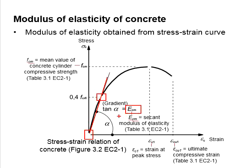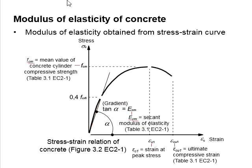Draw a line from the origin to the intersection point. The gradient represents the modulus of elasticity, or more exactly Ecm, which is the secant modulus of elasticity. This value can also be obtained from Table 3.1.